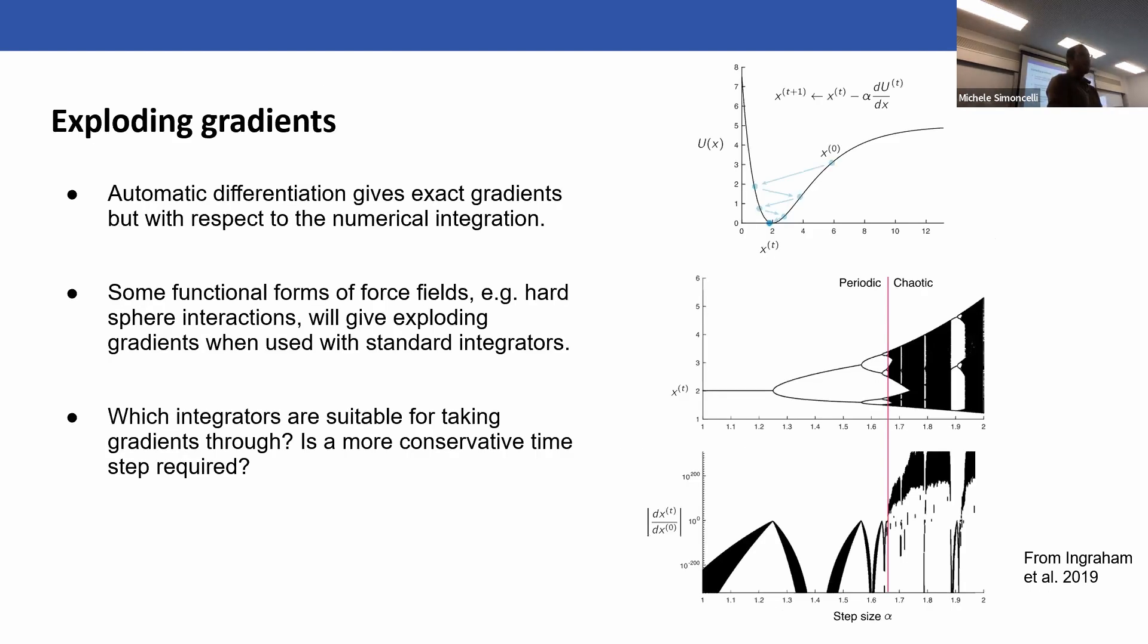Another issue is exploding gradients. When you do AD you get exact gradients - well, exact to floating point error - but they're exact with respect to the numerical integration. And of course the numerical integration is just an approximation of the actual dynamics. Some functional force fields with hard sphere interactions are going to give exploding gradients. So there are questions that I think are going to have to be addressed about which integrators are suitable to take gradients through, and could you use a more conservative time step for instance.